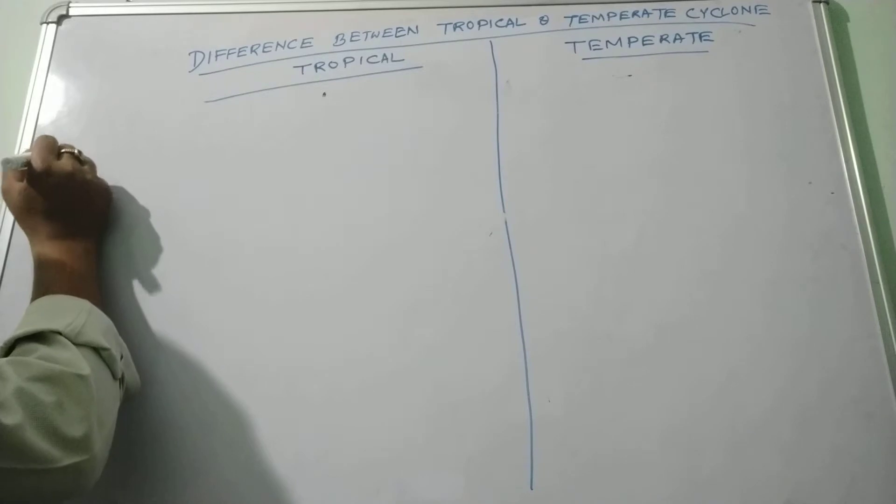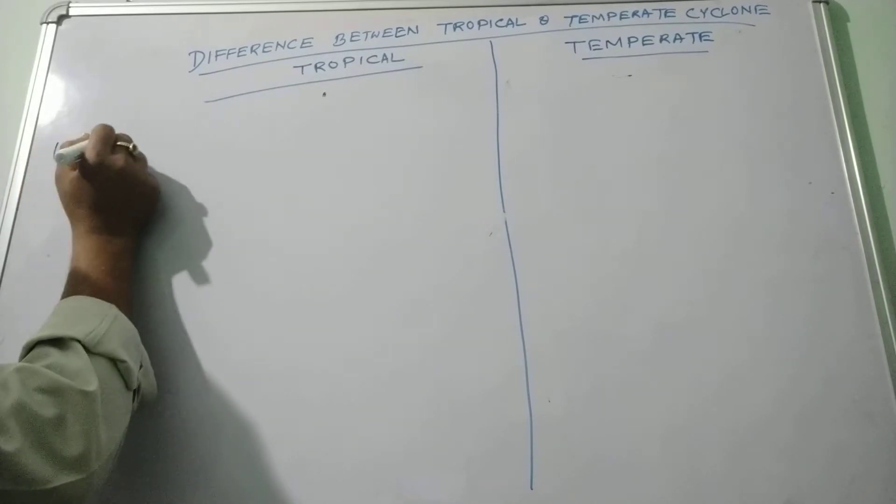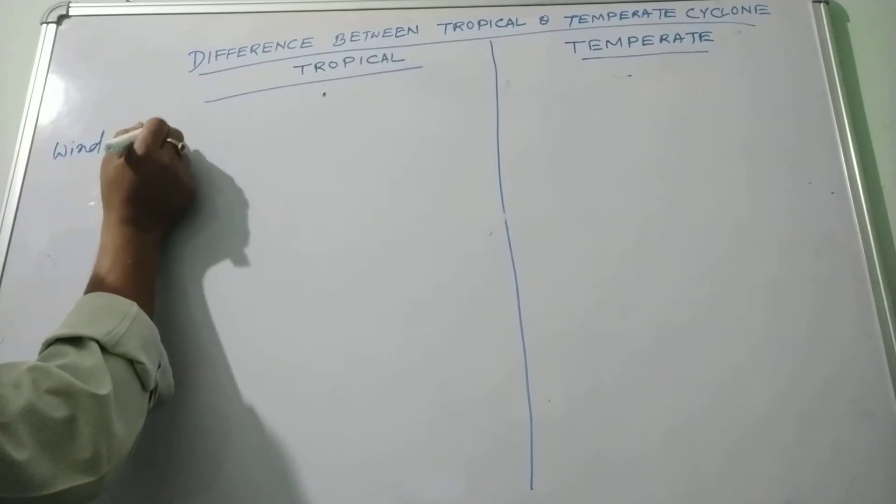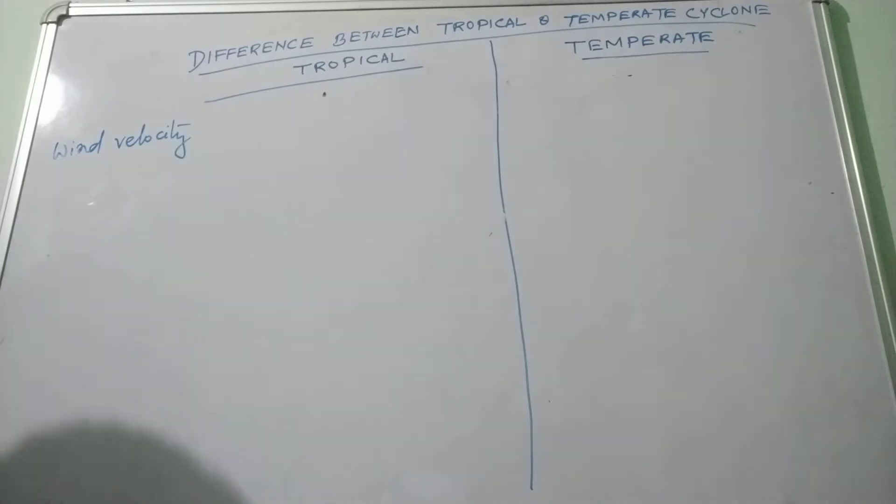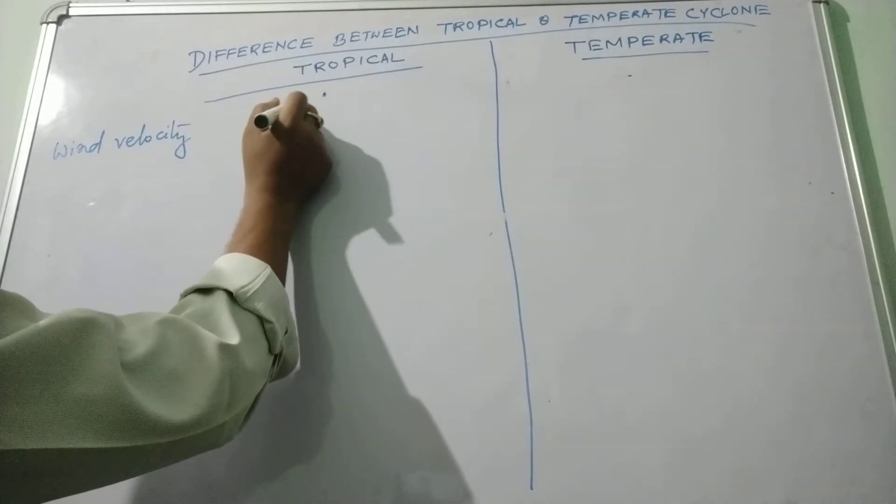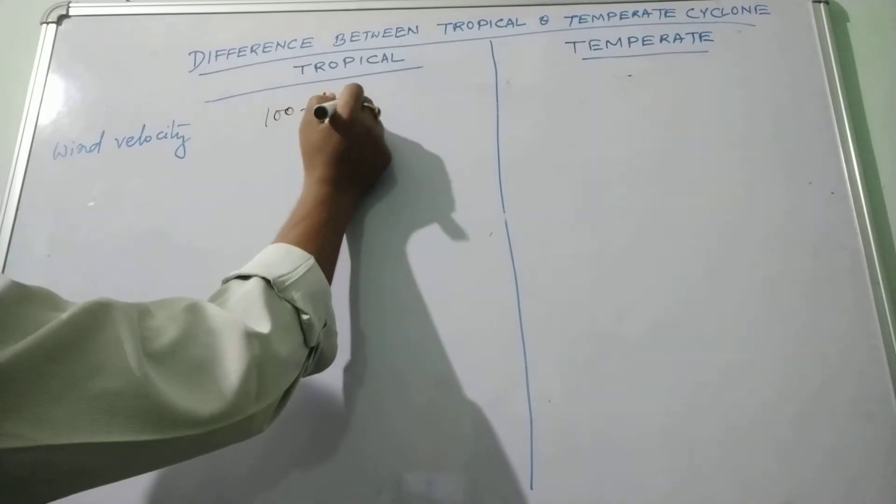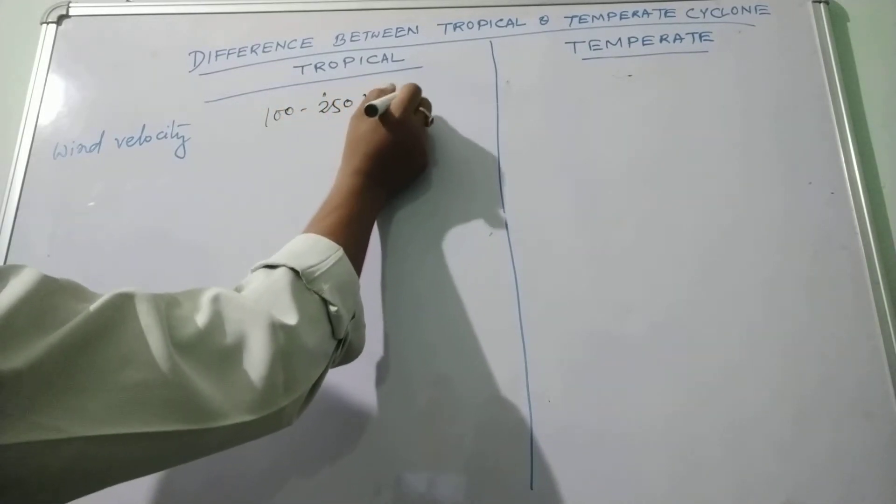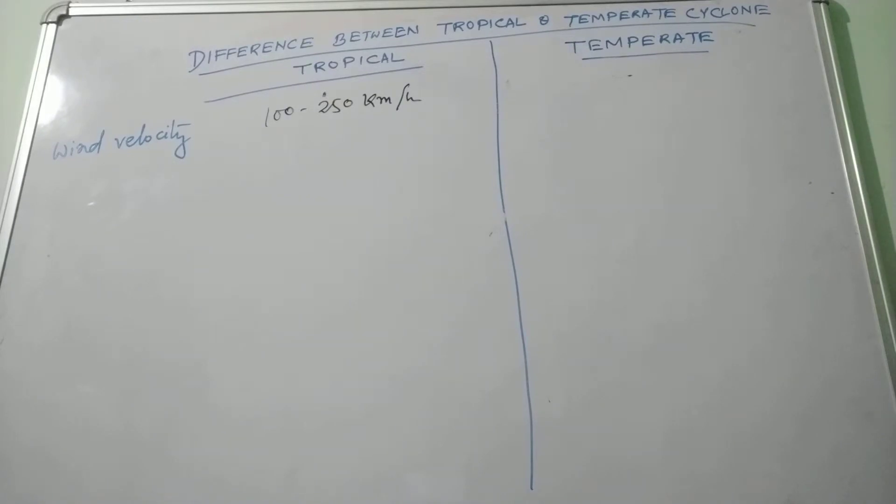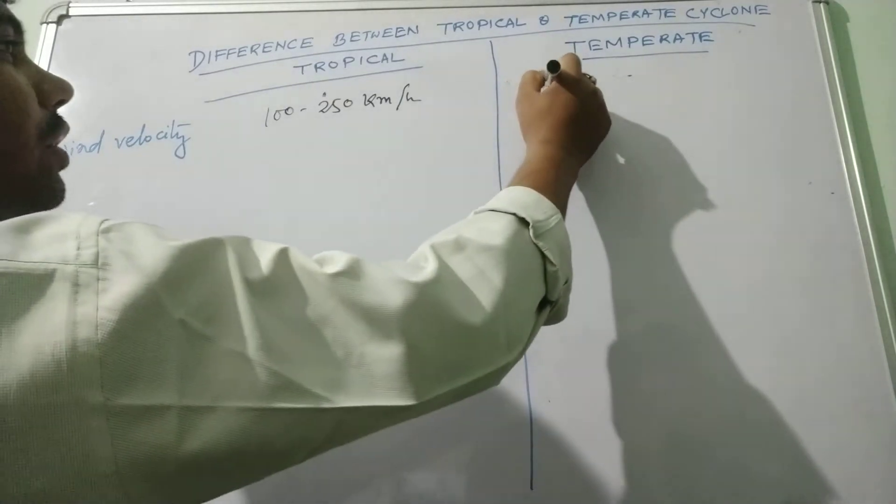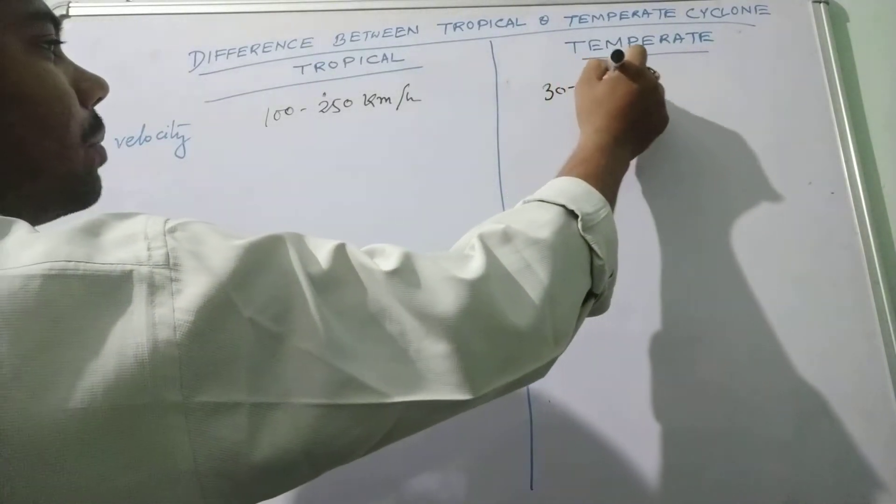The wind velocity of the tropical cyclone varied from 100 to 250 kmph, whereas in the temperate cyclone it is 30 to 80 kmph.